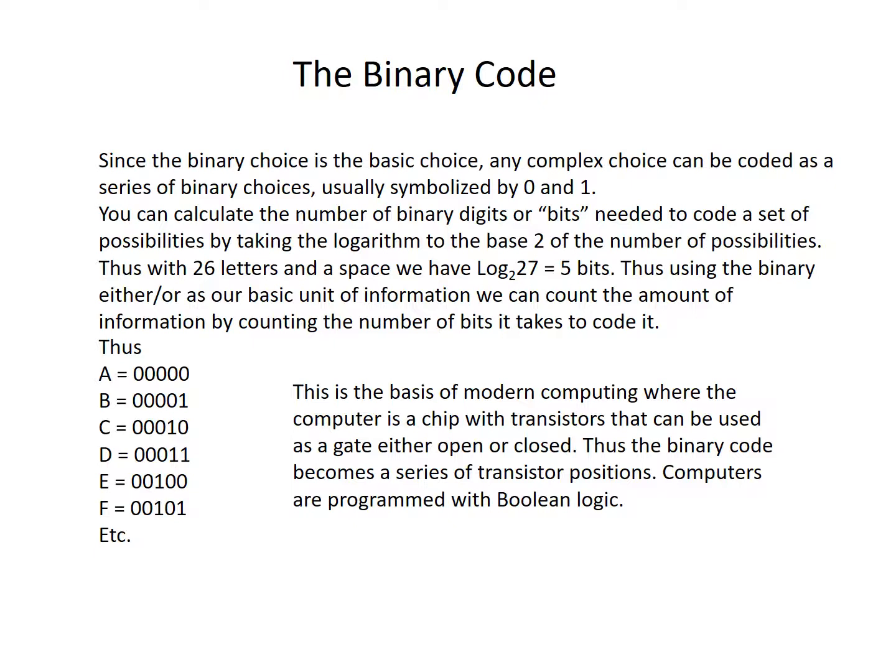The binary code. Since the binary choice is the basic choice, any complex choice can be coded as a series of binary choices, usually symbolized by 0 and 1. You can calculate the number of binary digits, or bits, needed to code a set of possibilities by taking the logarithm to the base 2 of the number of possibilities. For example, with 26 letters and a space, we get log base 2 of 27, which equals 5 bits. Using the binary either-or as our basic unit of information, we can count the amount of information by counting the number of bits it takes to code it.